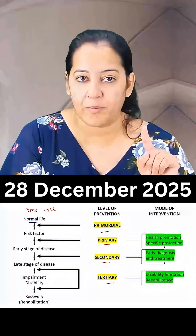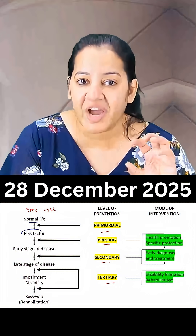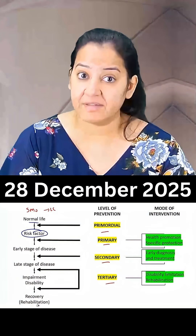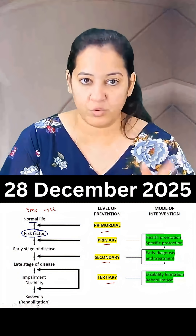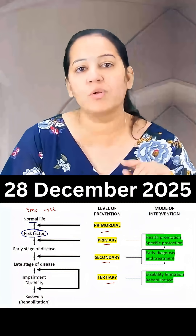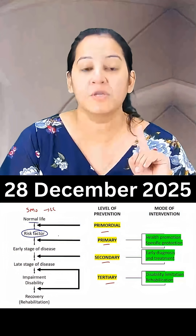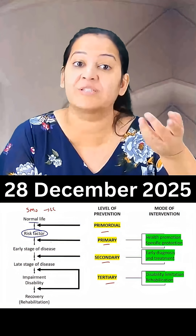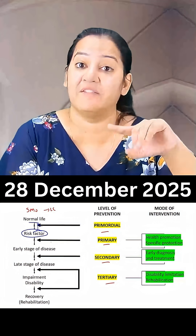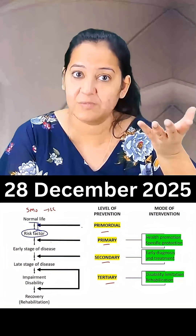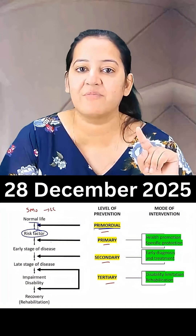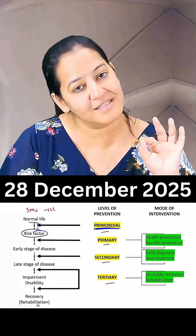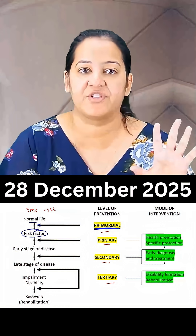Now there is normal life. Imagine a child, a kid who does not smoke. The father is encouraging this thought that you don't smoke now, and in future also you don't smoke. So the intervention is taken before the risk factor appears, even before smoking. This level of prevention is known as primordial. This is the best level of prevention.